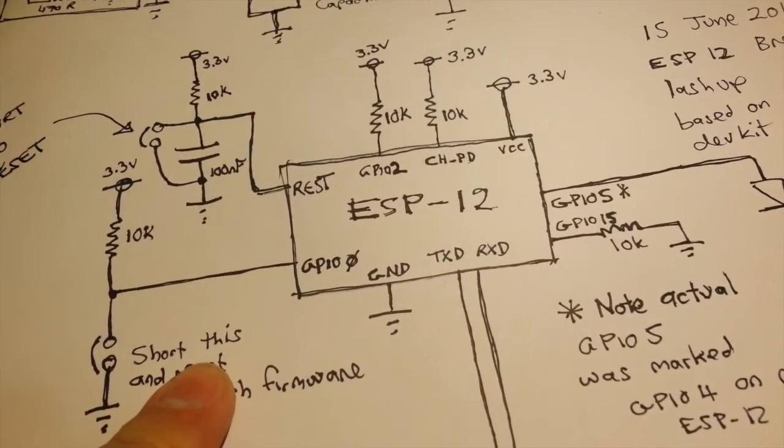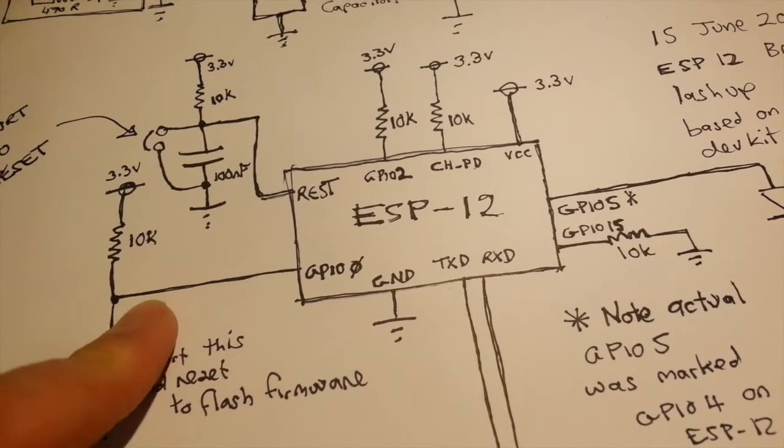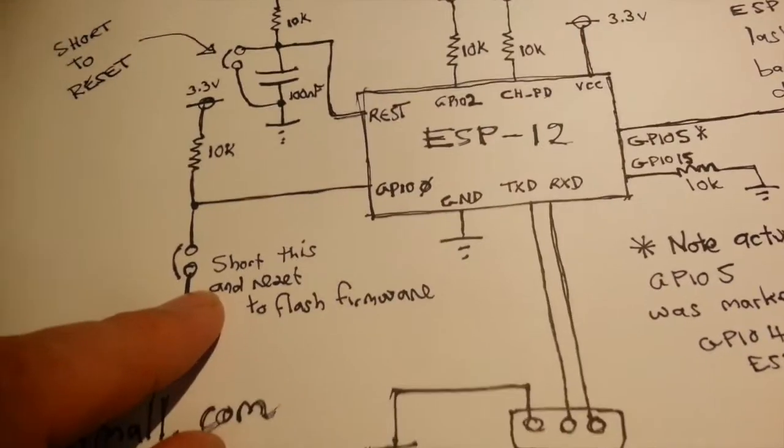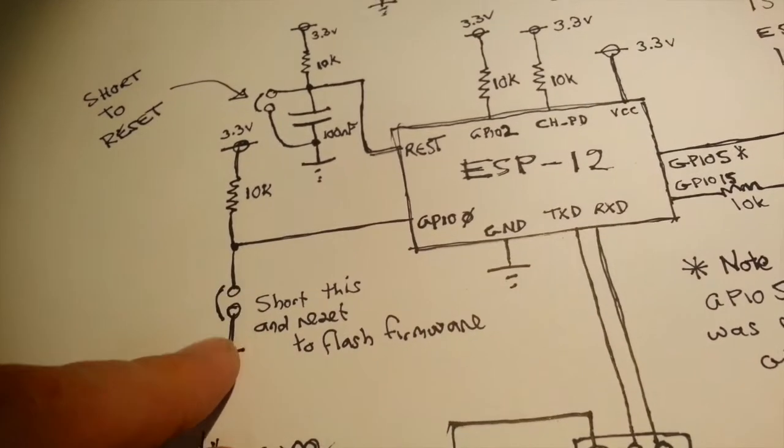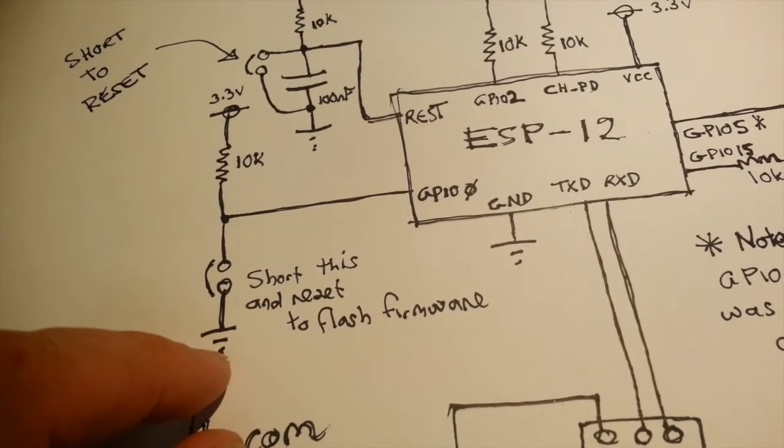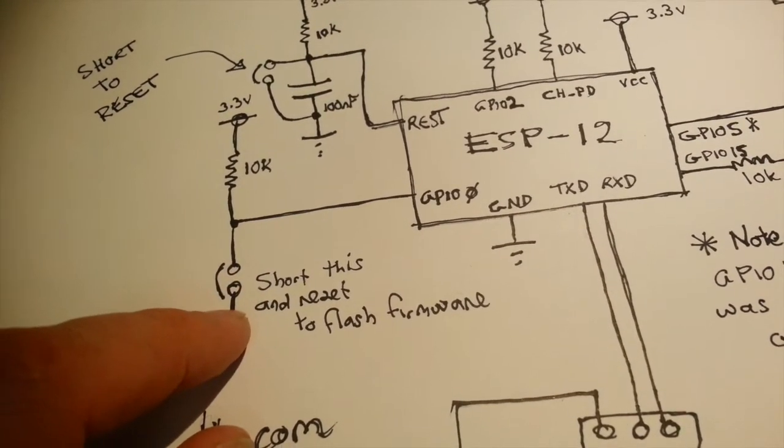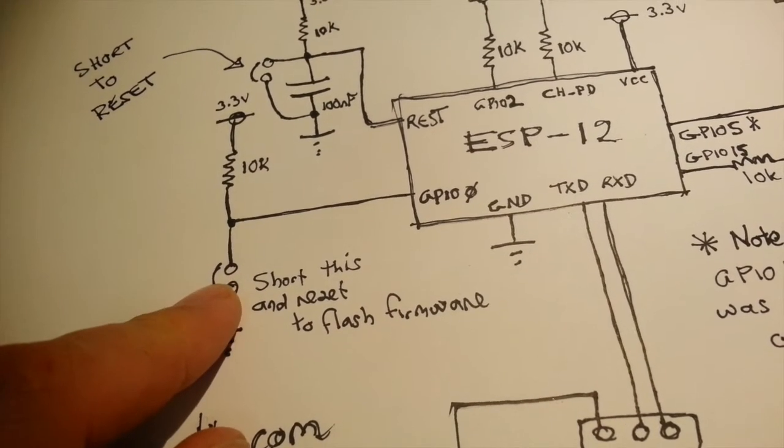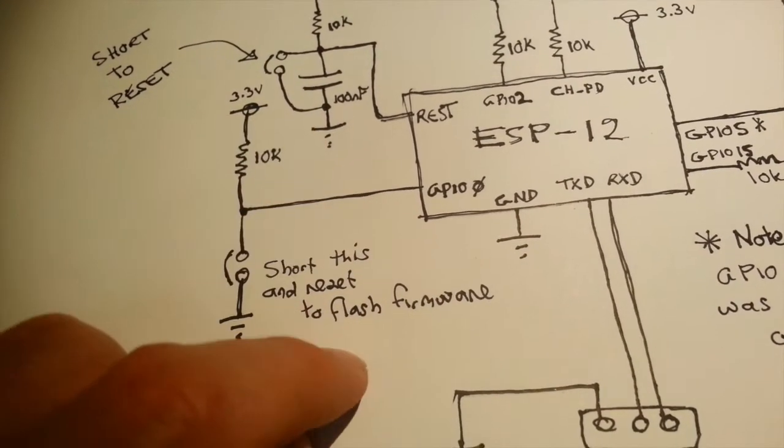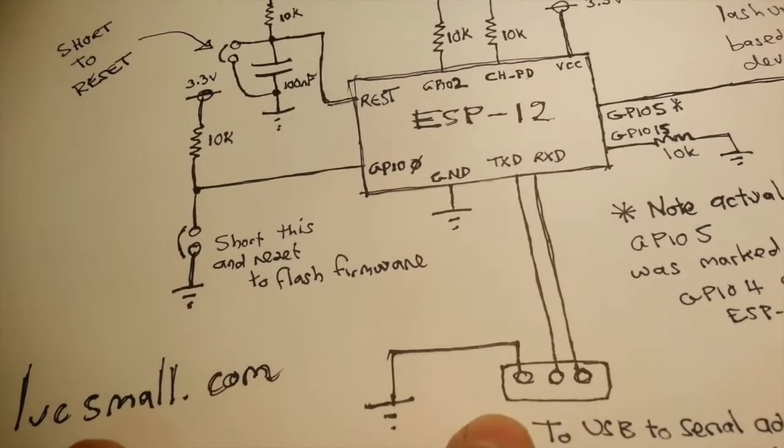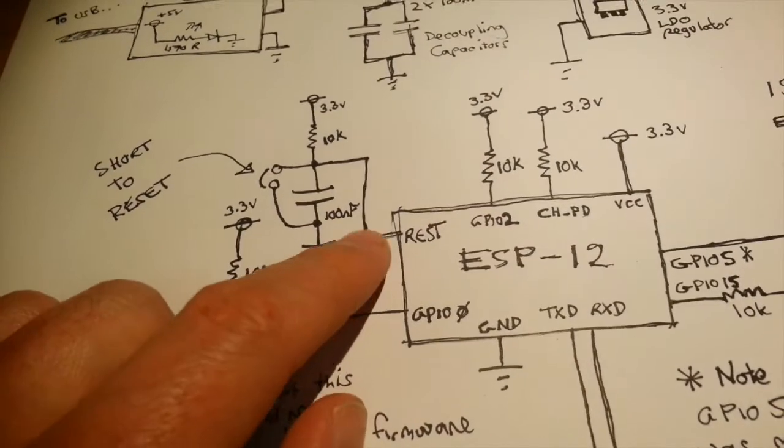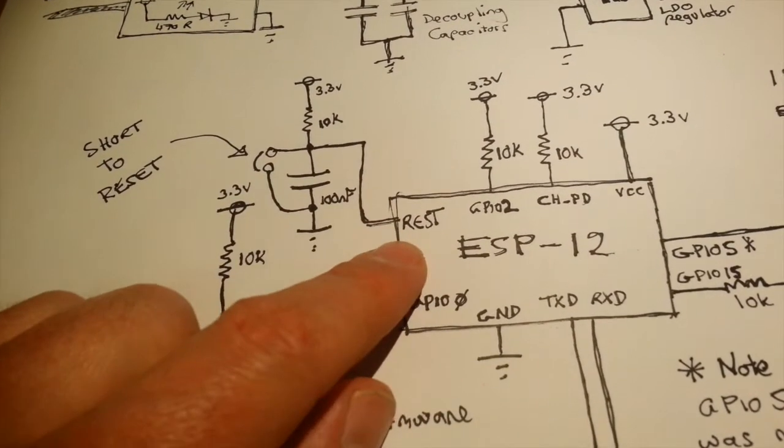Ground connects here of course to the ESP12, and then GPIO0 here is normally tied high to 3.3V, and then I've got this ability to short it here. In a breadboard type situation that's just running a jumper cable to the ground connection when you want it. But if I were to make a PCB out of this, I'd probably put a little jumper there or maybe a tactile switch or something like that that I can hold down. So when you hold that down and then reset the device, it goes into firmware update mode, and then you're able to flash new firmware onto this device via the serial connection.